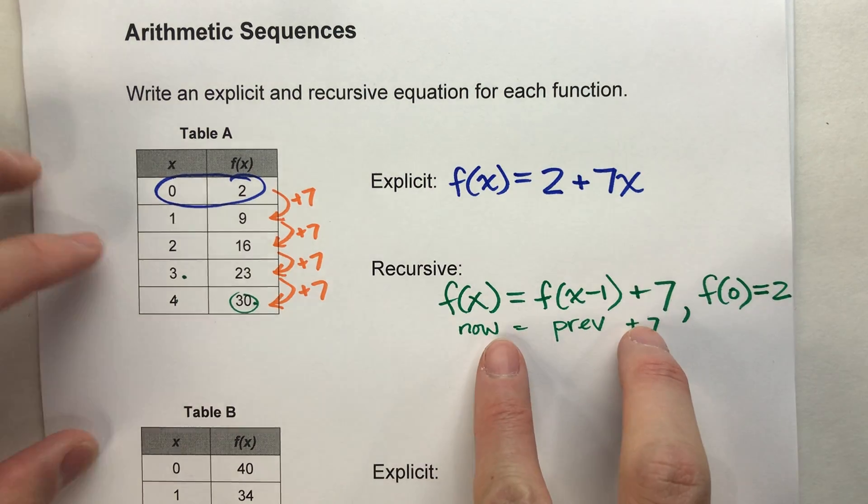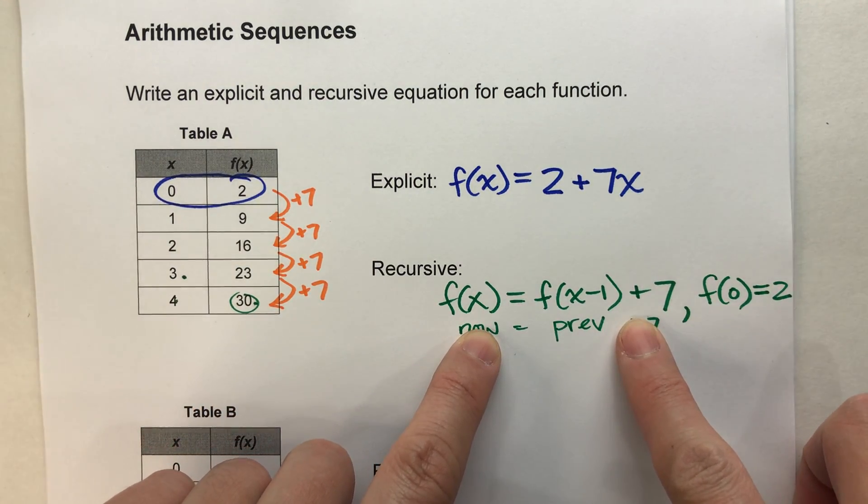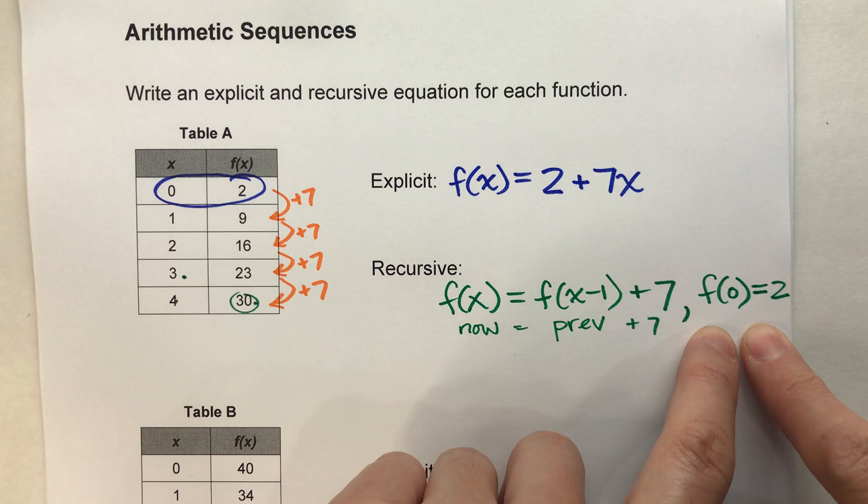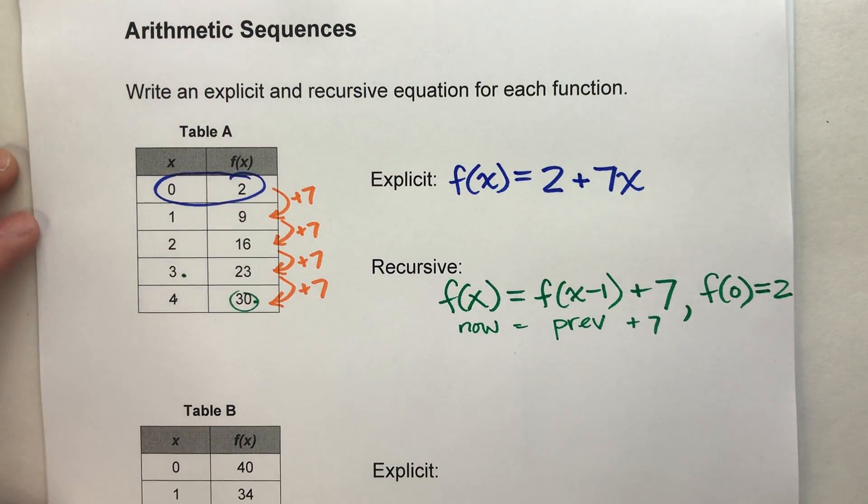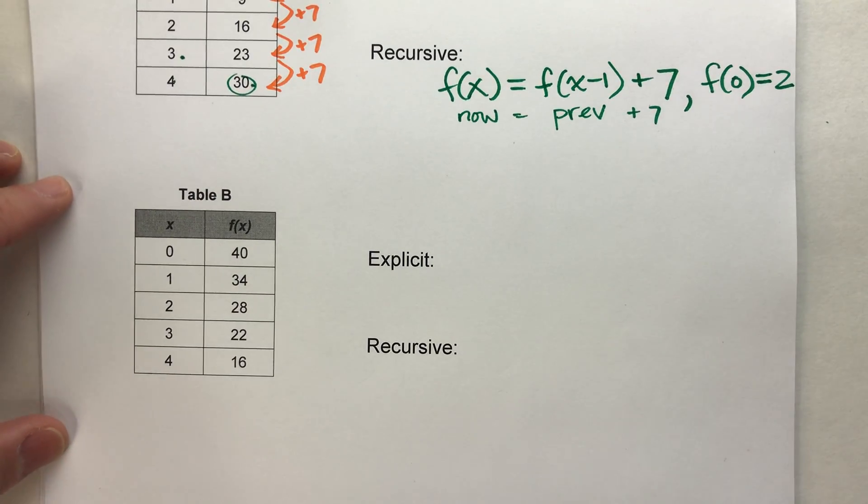So a recursive equation has to have that pattern that tells you how to calculate the value, but it also has to tell you where the sequence started at. Let's do another example so you can see it in action.